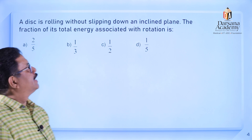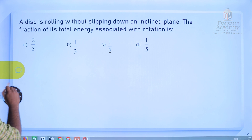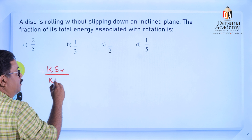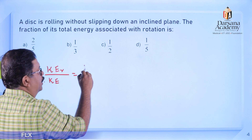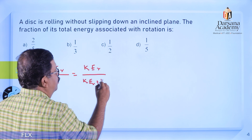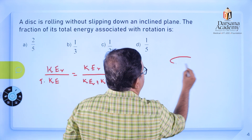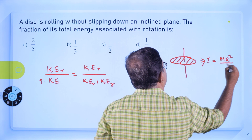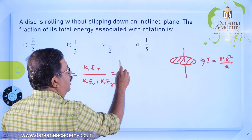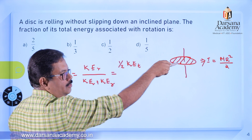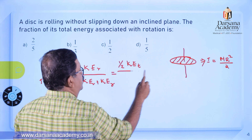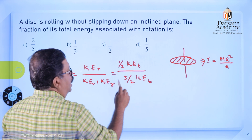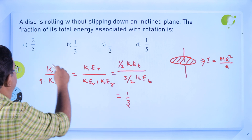Third question: A disc is rolling without slipping down an inclined plane. Find the fraction of total energy associated with rotation. The moment of inertia of a disc is I = (1/2) MR². The coefficient of MR² is 1/2. So KER = (1/2) KET. Total KE = (1/2) KET + KET = (3/2) KET. The fraction is (1/2) KET divided by (3/2) KET = 1/3. The answer is option B.